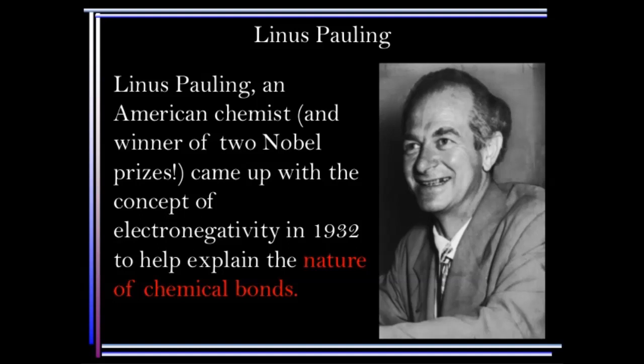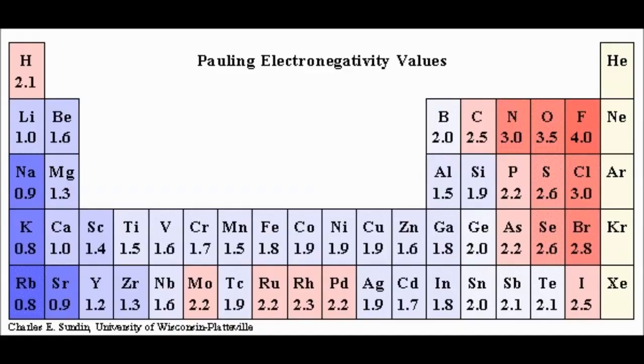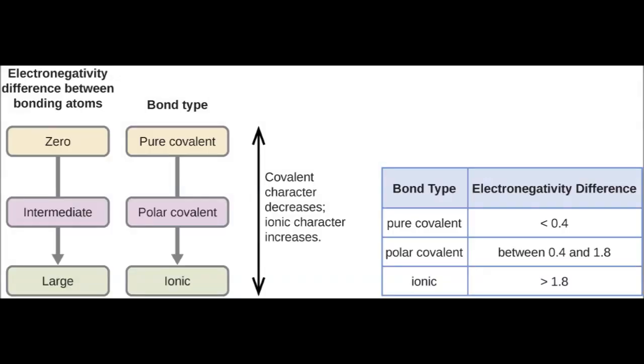The original electronegativity scale developed in the 1930s by Linus Pauling was based on the measurements of the strength of covalent bonds between different elements. Pauling arbitrarily set the electronegativity of fluorine at 4, although today it has been refined to 3.98. Thereby, he created a scale in which all elements have values between 0 and 4. These are the electronegativity values assigned to each element on Pauling scale. Looking at it, we can predict the bond polarity of any bond. Let's find how.